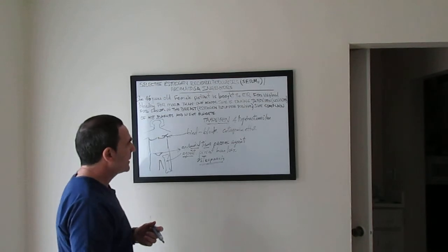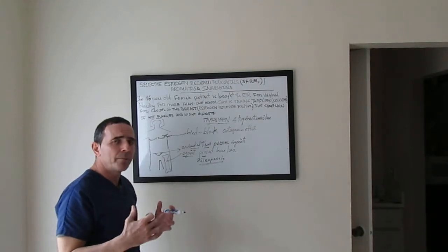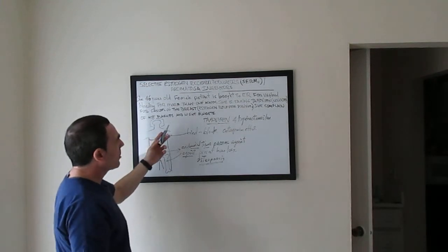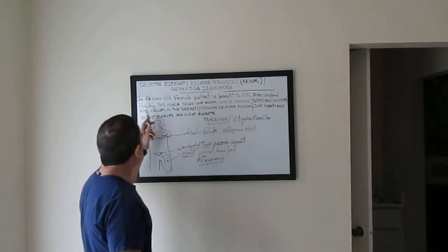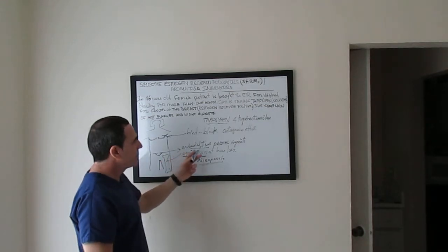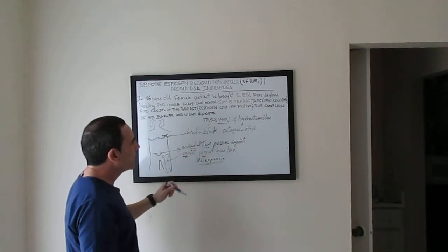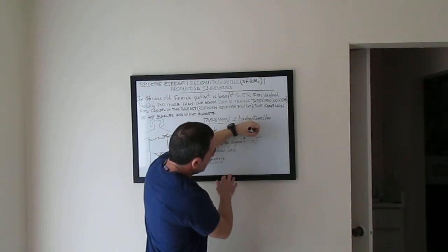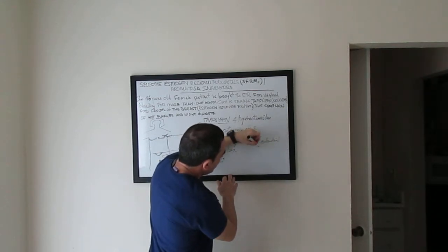But you need to explain to the patient the side effects — this is very important. Because, for example, our patient is presenting with vaginal bleeding. In the endometrial tissue, tamoxifen has partial agonist effects, and this is linked with endometrial cancer. This is a significant concern: endometrial cancer.